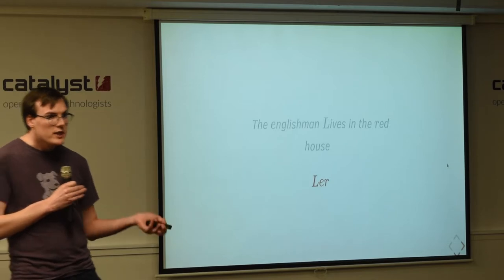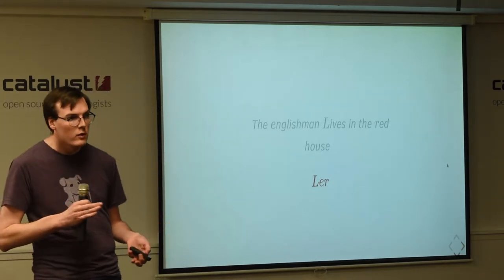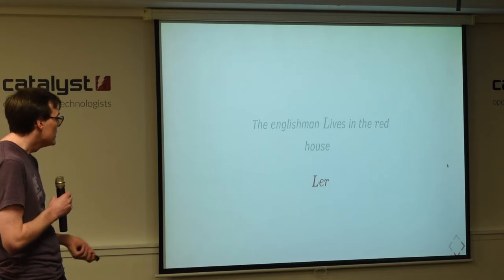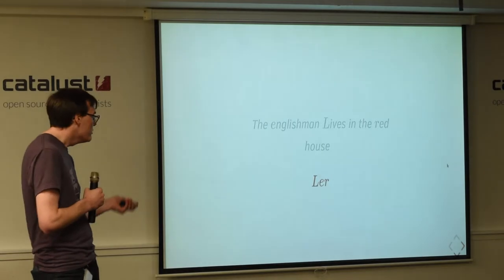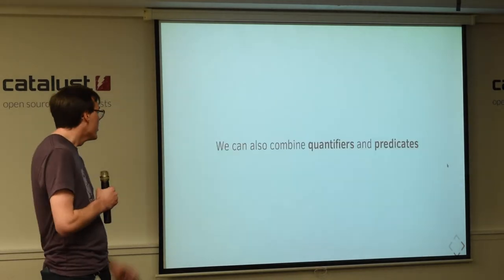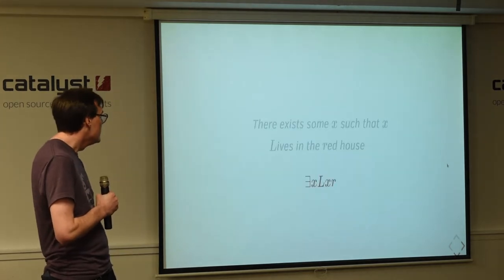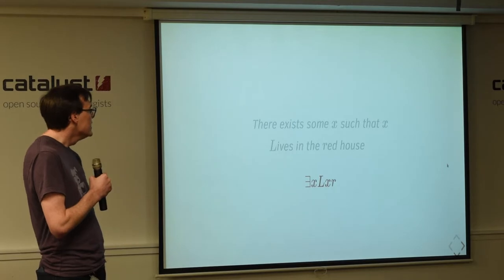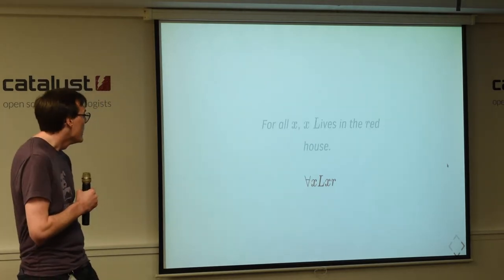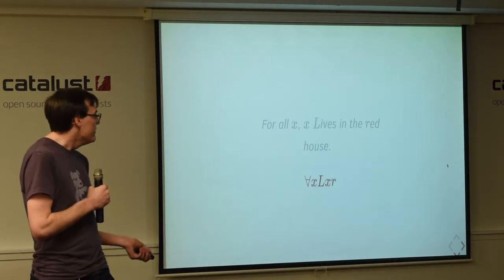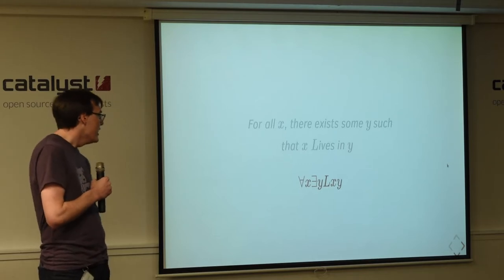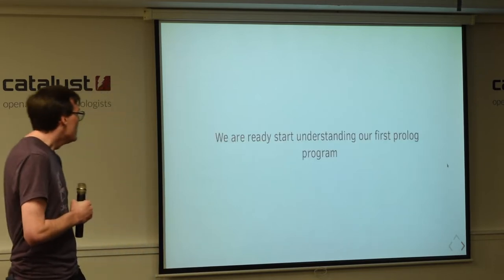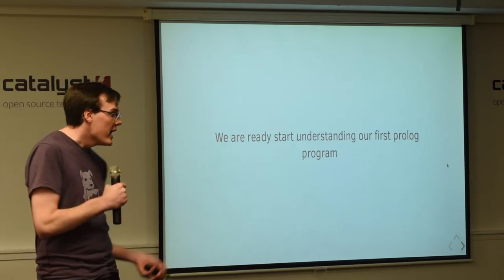So using these constructs, we can start building models of the real world. Relationships between objects, such as from our riddle, the Englishman lives in the red house, which noting the prefix notation, we can represent as LER. We can also combine quantifiers and predicates. So combining the existential quantifier and the lives in predicate, we can say there exists some x such that x lives in the red house. Or all x live in the red house. And we can go on. It starts to get interesting, to say the least. But that's really all we need to understand to start looking at prologue as a language.